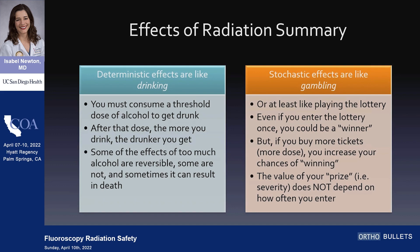Deterministic effects are like drinking — you must consume a threshold of alcohol to get drunk, and after that, the more you drink the more drunk you get. Some of these effects are irreversible and some could even be fatal. Stochastic effects, on the other hand, are like playing the lottery. Even if you enter the lottery once, you could win the worst prize ever. If you buy more tickets — which is like more dose — you have more chances of winning, but the size of your prize is irrespective of that.